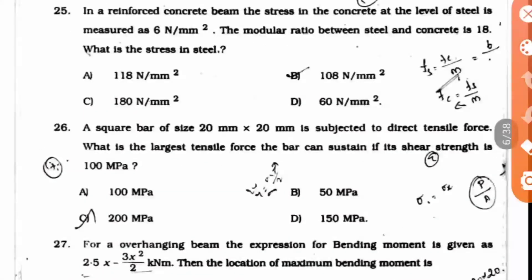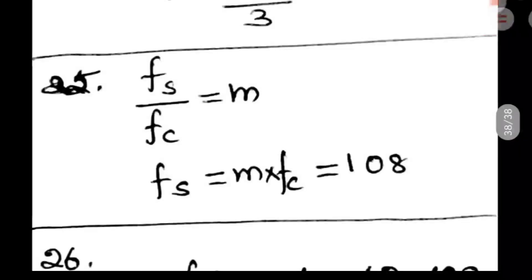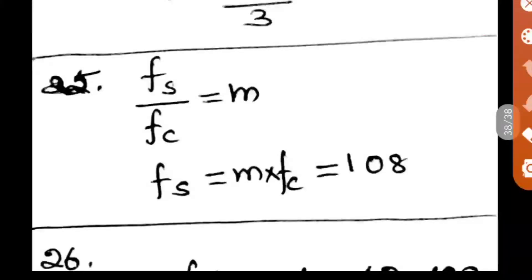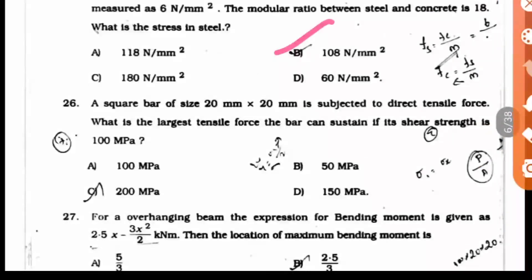Question 25: In a reinforced concrete beam, the stress in the concrete at the level of steel is measured as 6 N per mm square. The modular ratio between steel and concrete is 18. What is the stress in the steel? Here Fs by Fc equals M. So Fs equals M times Fc, the modular ratio times stress in concrete. The answer is 108. Option D is the answer.